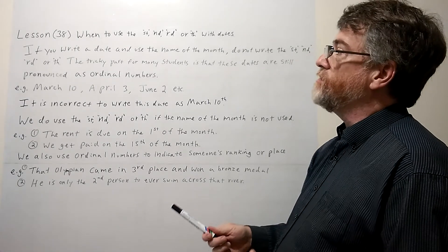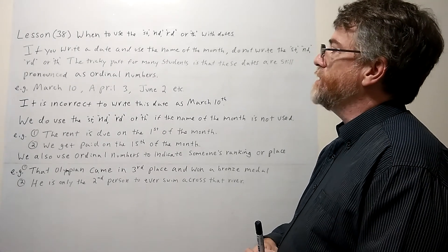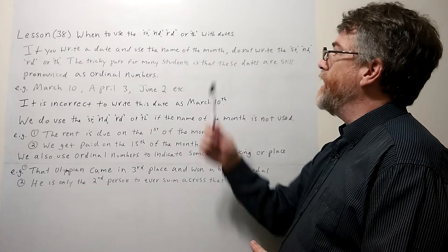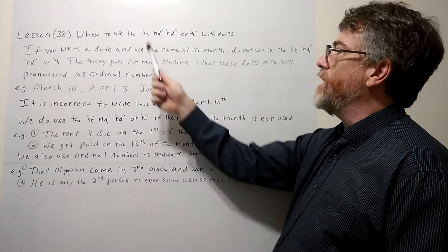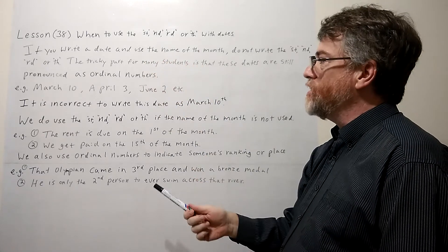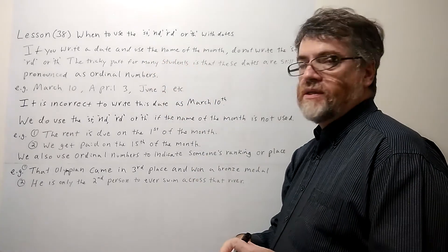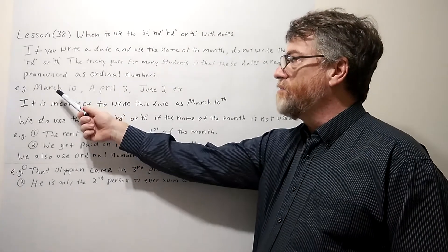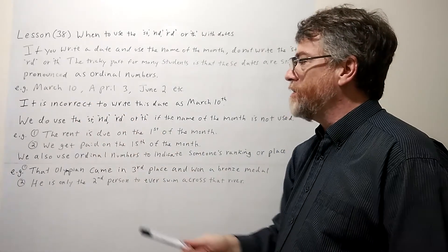All right, again, so just very quickly to review. One of the things to make sure is that if the name of the month is written, do not write the ST, ND, RD, or TH. These dates are always pronounced as ordinal numbers, you know, March 10th, April 3rd.